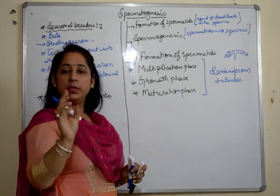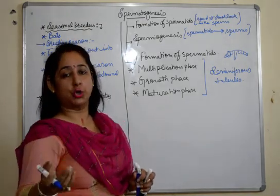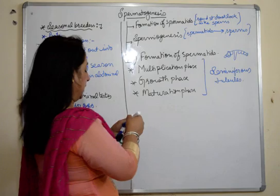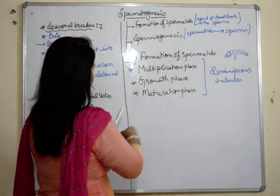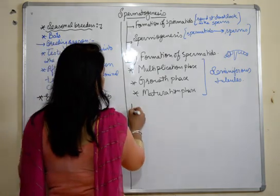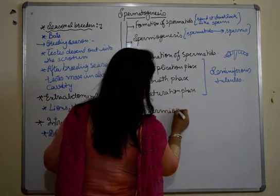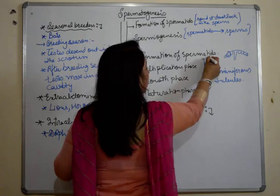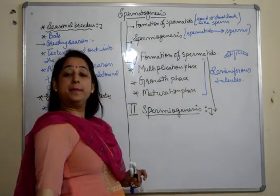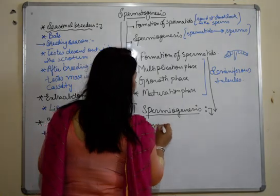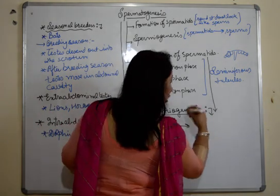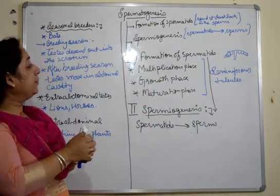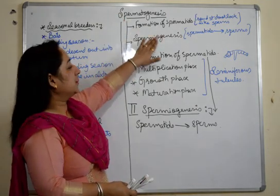The spermatid that is formed is rounded in structure and has a nucleus, but it needs to mature and become motile. This is done in the next phase: spermiogenesis. In spermiogenesis, the spermatid undergoes transformation and becomes a mature, motile sperm. These are the two main stages of spermatogenesis.